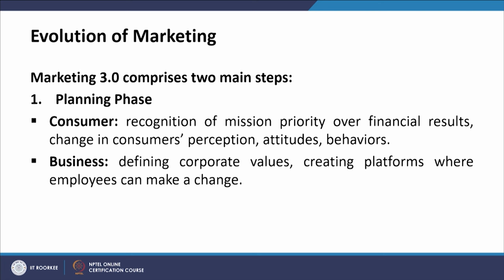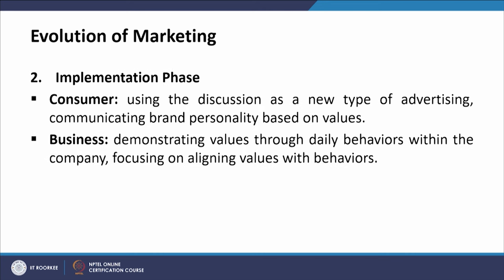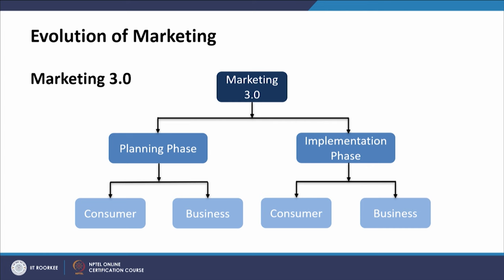Marketing 3.0 comprises two main phases. The first is the planning phase: recognition of mission priority over financial results, and change in consumers' perceptions, attitudes, and behaviors; for business, defining corporate values and creating platforms where employees can make a change. The second is the implementation phase, viewed from two perspectives — consumers: using discussion as a new type of advertising and communicating brand personality based on values; business: demonstrating values through daily behavior within the company and aligning values with behaviors.